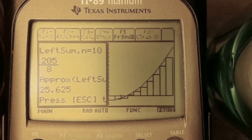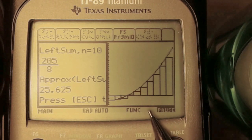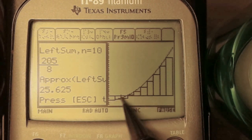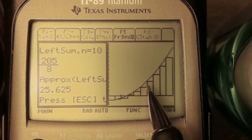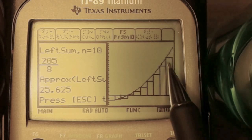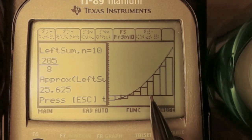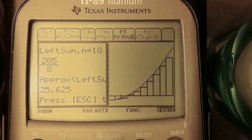We get an approximation of 25.625 using a left Riemann sum. As we can see, this is an underestimate because the rectangles are under the curve, which means there is little space for more area. This approximation is less than the actual area under the curve.